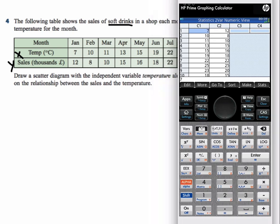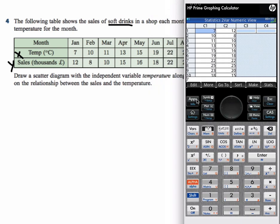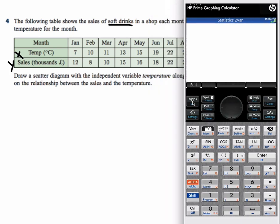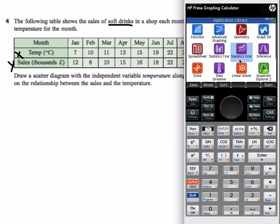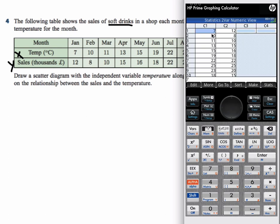Alright, so let's take a look at our calculator. Now, you should go to apps, and then go to statistics, two variables statistics, because we have two variables. And let's click enter on that, and then we can type in the data.